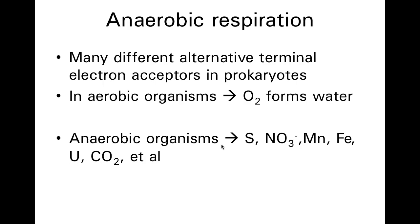Anaerobic organisms can use a number of different terminal electron acceptors, like sulfur, nitrate, manganese, iron, even uranium, and carbon dioxide, among others. These are all things that only prokaryotes can do — eukaryotes cannot.